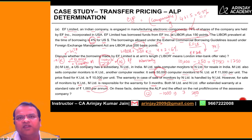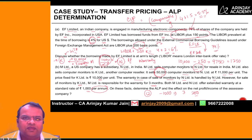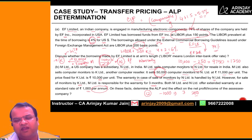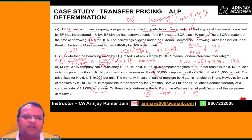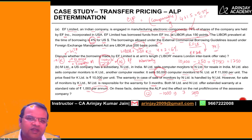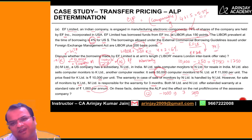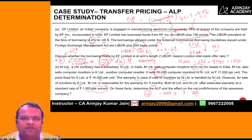Why would the cost be disallowed? For N Limited this is a purchase. In the purchase, what they are doing is paying more to their related party by 1,250 per computer for 50,000 computers. Therefore the disallowance will be 50,000 times 1,250. So the disallowance will be 6 crores 25 lakh rupees.